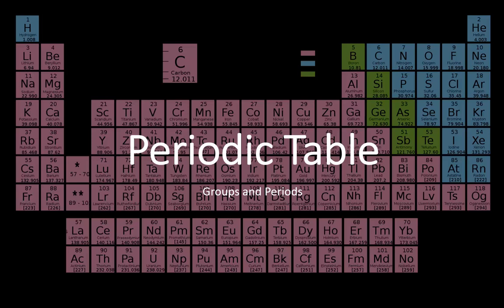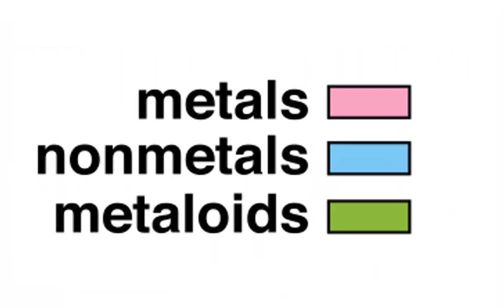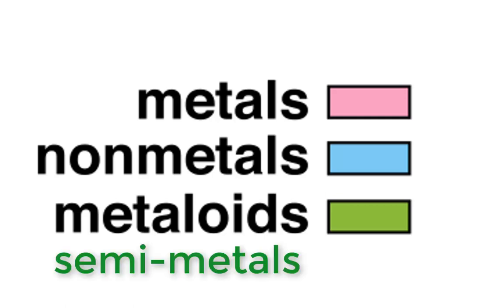The periodic table of the elements is a very useful tool in chemistry. The first thing to notice is that the elements are divided into metals, non-metals, and metalloids. The metalloids are also called semi-metals.